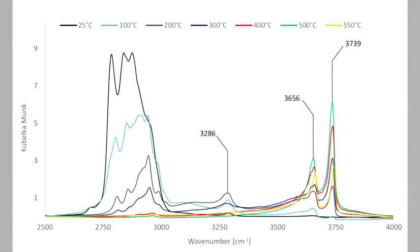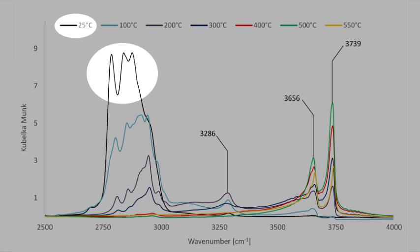At room temperature, the CH stretch bands from the tin precursor at 2750 and 3000 wave numbers can be observed. As the temperature reached 100 degrees C, these bands already significantly decrease, while bands at 3286 and 3656 wave numbers appear.